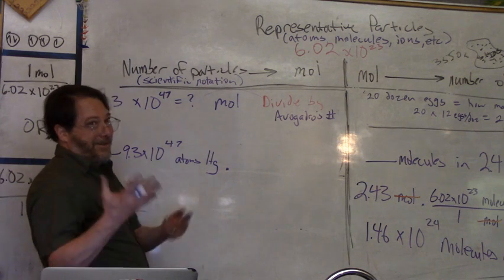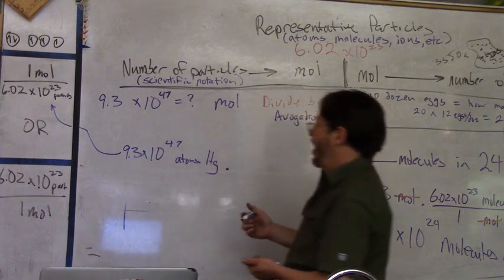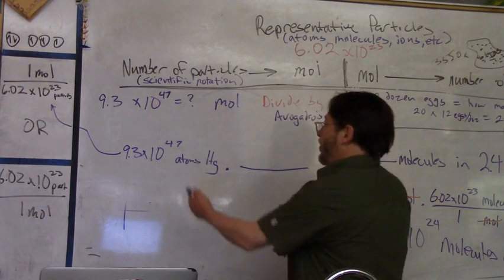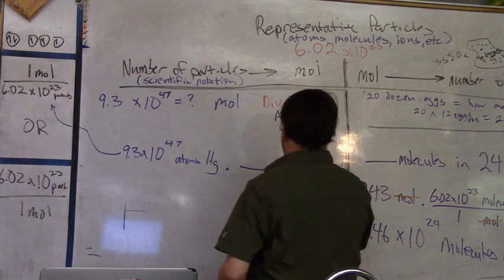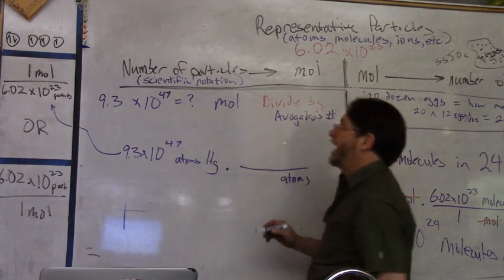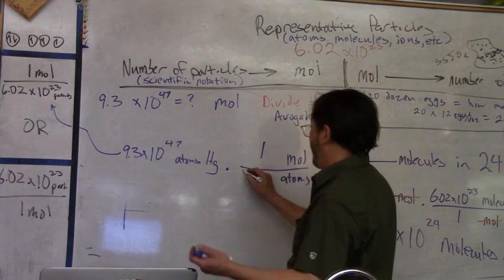It doesn't matter what the substance is when you're talking about mole calculations with particles, because we're just talking about numbers. We would do times the conversion factor that has particles or atoms on the bottom and moles on the top. What goes with that is one mole over Avogadro's number.